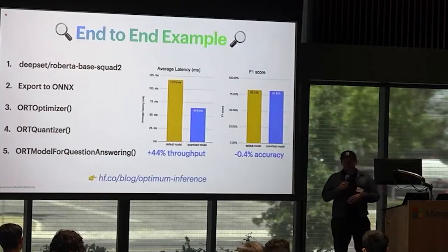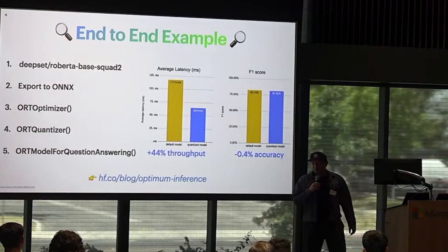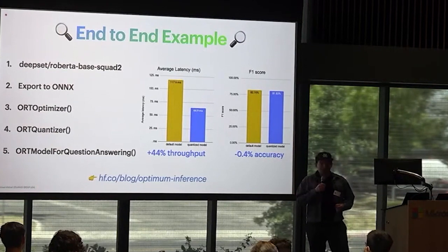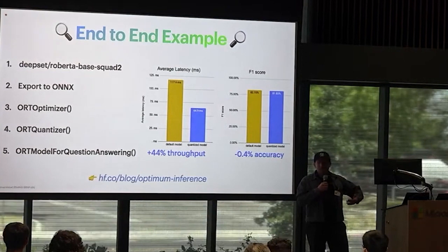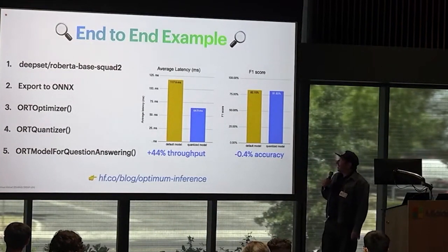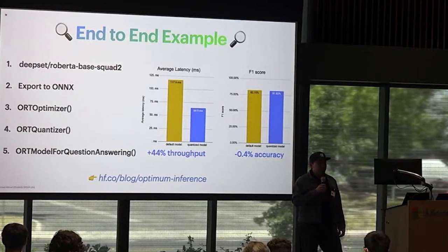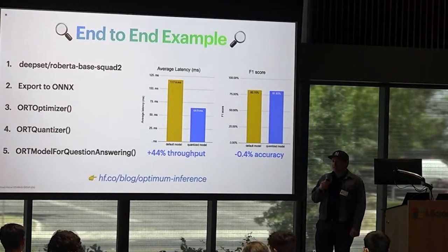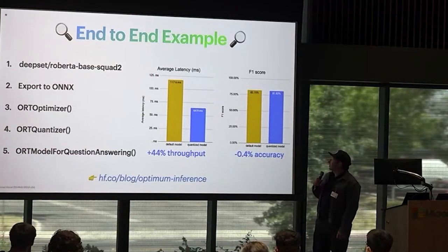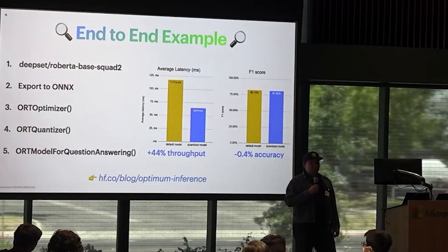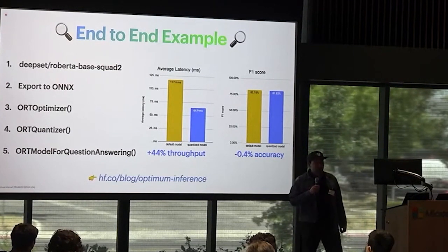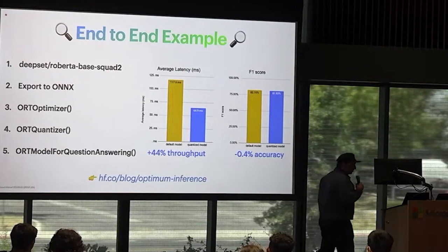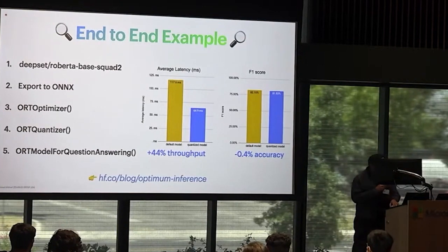To put it all into an end-to-end example, we just published a new blog post at hf.co/blog called 'Optimum Inference.' It walks through the full user story: starting from a pre-trained model fine-tuned for QA, exporting it to ONNX, applying optimization and quantization, and using the ORTModel for QA class to get accelerated performance. You get a 44% throughput increase, or latency decrease, while conserving 99.6% of the original model accuracy.